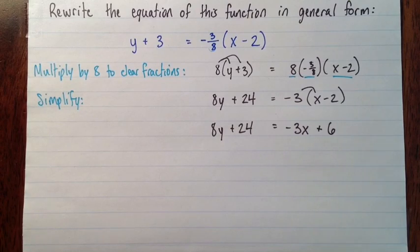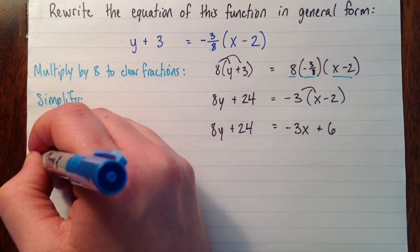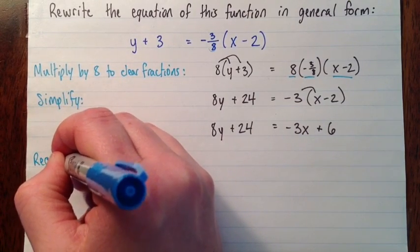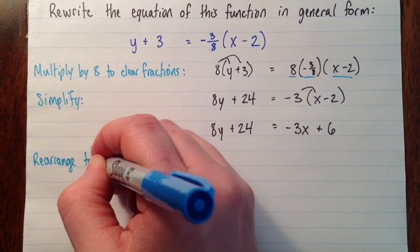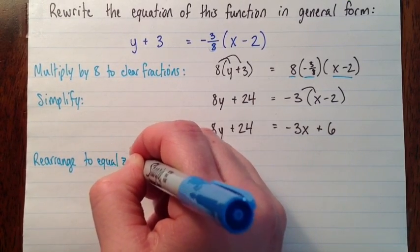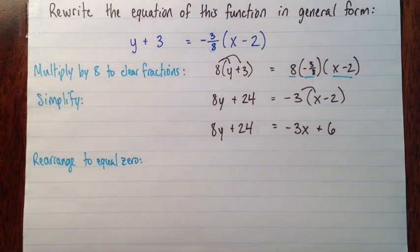And now I want to group everything onto the same side. So I'm going to write rearrange to equal 0. Just because that's how general form looks. Everything is equal to 0. So everything is on one side equal to 0 on the other side.